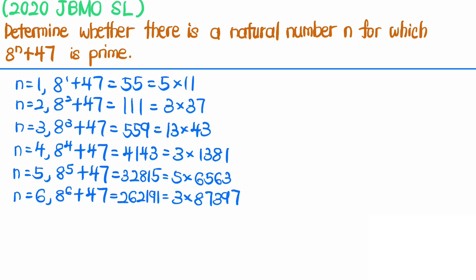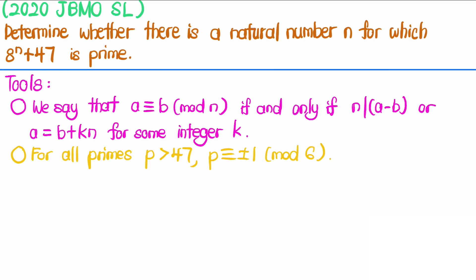Since from n equals 1 to n equals 6 none of the numbers are prime, it is tempting to say that such n doesn't exist. We will now try to prove that no natural number n exists such that 8^n + 47 is prime. Tool number one: we say that a is congruent to b modulo n if and only if n divides a minus b, or equivalently a = b + kn for some integer k.